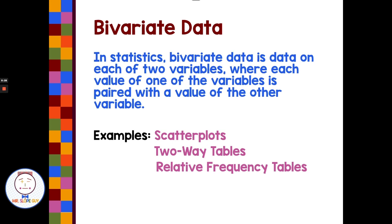We've seen this in things like scatter plots, where you're matching up two variables to make a single point — not like circle graphs or histograms, where you're talking about one piece of data compared to the whole or other parts. So bivariate data means we're talking about two variables.